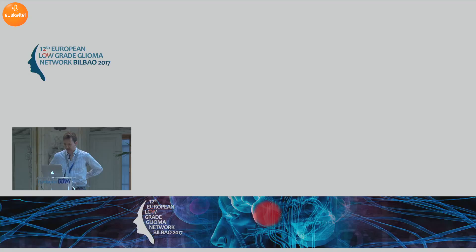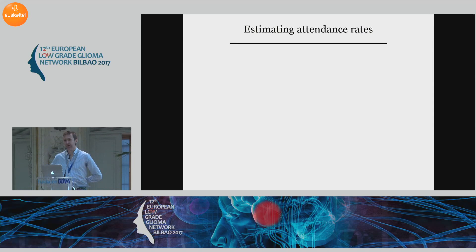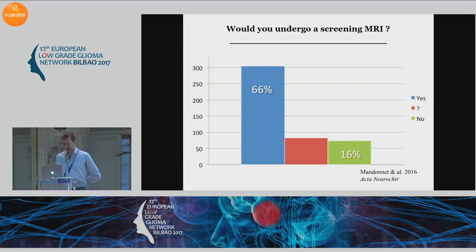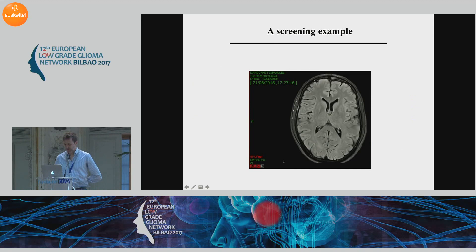So the next question is: on a medical point of view, we should probably set up a screening. But do people want to be screened? It's the brain — maybe people don't want to know that they have something in their brain. So we did a survey, which we diffused on social networks two years ago, to estimate how many people would like to undergo a screening MRI. The result is quite clear: two-thirds of people would be happy to do a screening MRI, 16% said no, and 16% had no opinion. I belong to the 66% because I've done my own MRI two years ago.